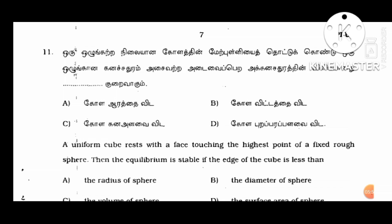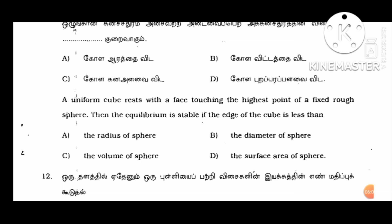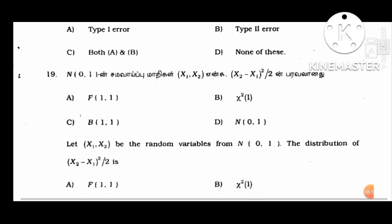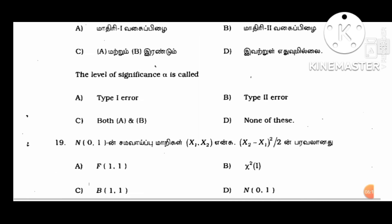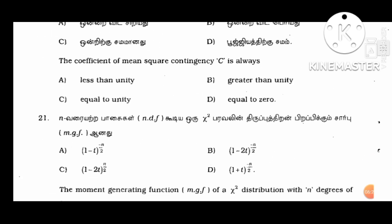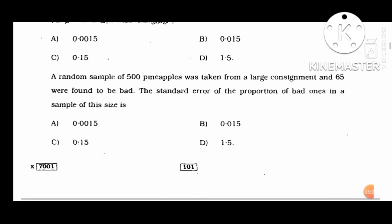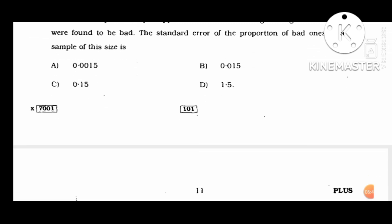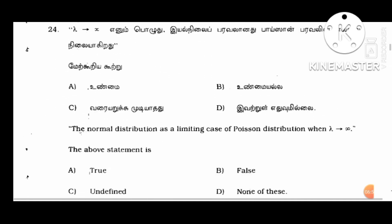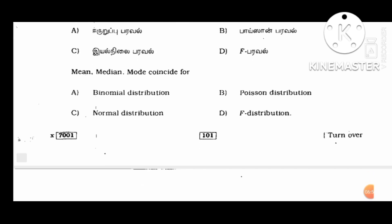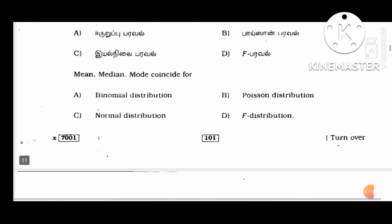In the same subject, we will analyze other questions. If there is a mix with statistics, we will cover a certain amount of statistics. Next, 20 percentage questions: start with a random sample of 5,000 pineapples — this is a very important question — taken from a lot with 65% defectives. Standard error of the proportion. This is a very important question on random variables. Regression is also a very important question. Mean, median, and mode coincide for any distribution.